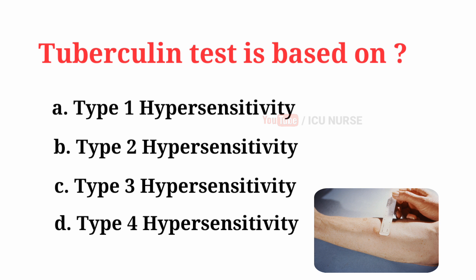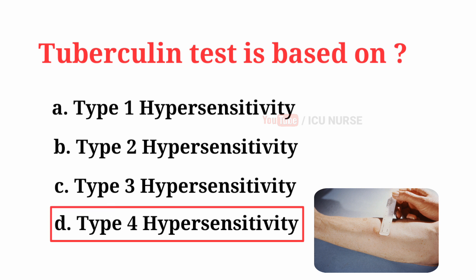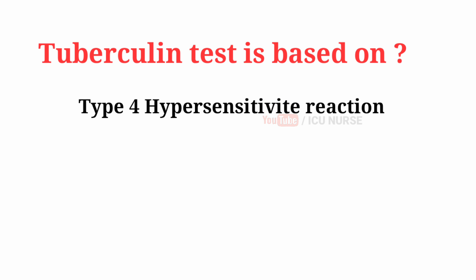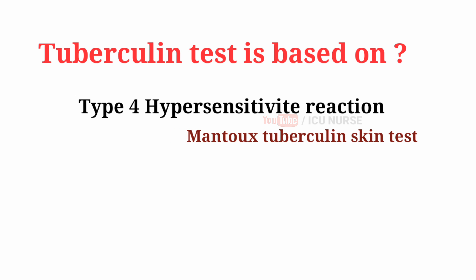Tuberculin test is based on... The correct answer is D, Type 4 hypersensitivity. An example of the type 4 hypersensitivity reaction is the Mantoux tuberculin skin test, which is performed to evaluate whether a person has been exposed to tuberculosis.